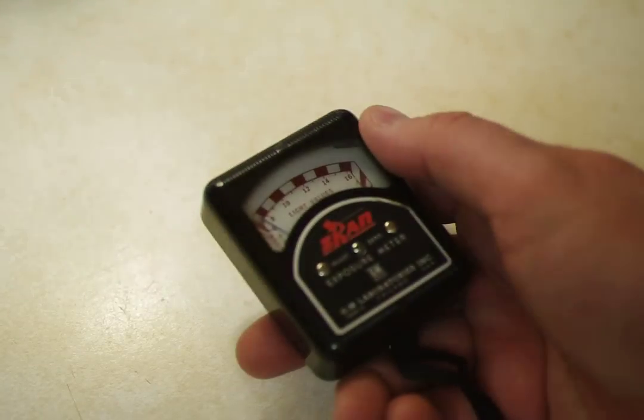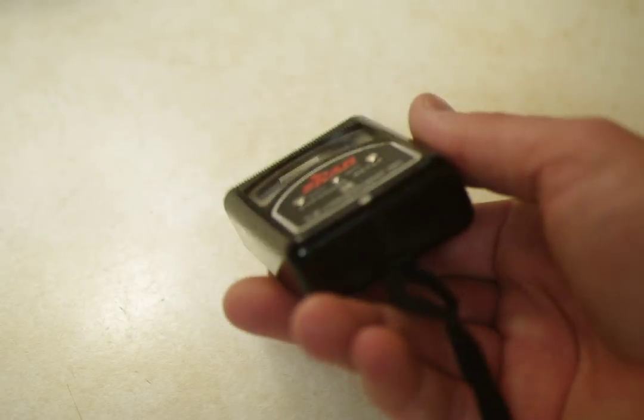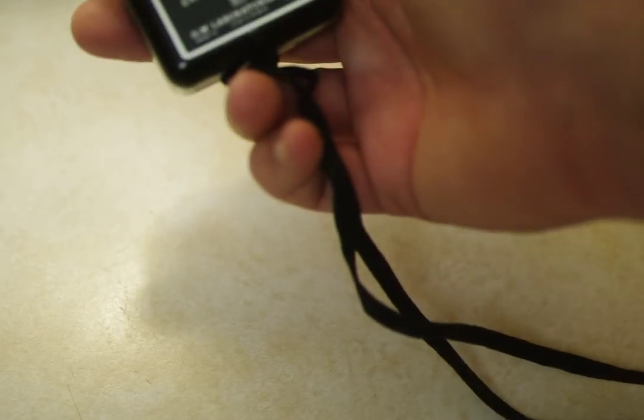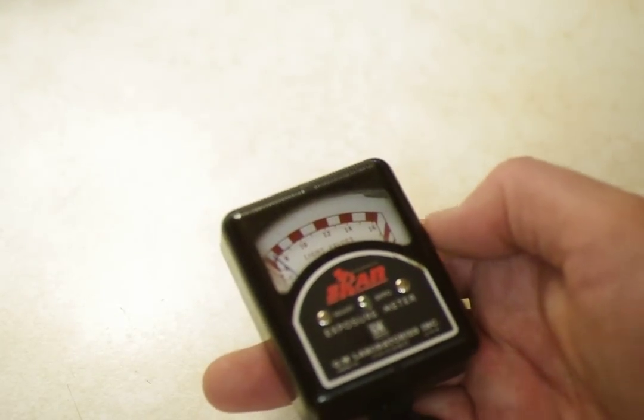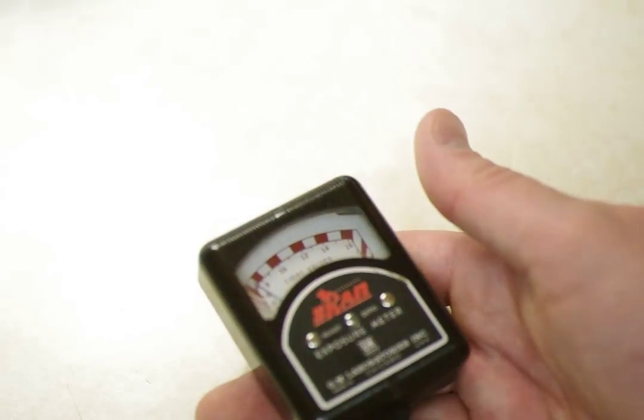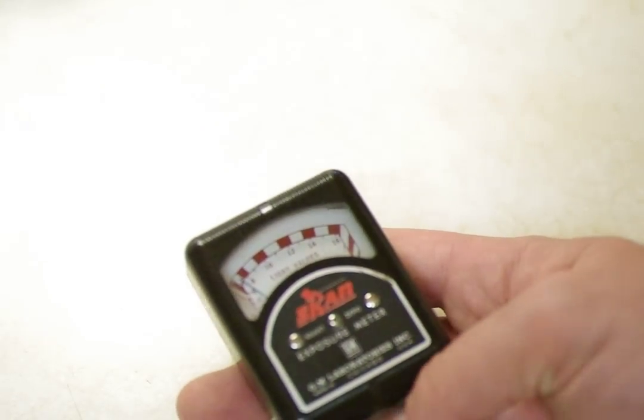So light meters were designed to be very simple devices. Photographer would pull it out of his pocket, pointed at the scene or pointed at a specific object he was photographing like this lamp off-camera and compute the light reading from that and using that he would then set his shutter and aperture settings according to the light meter, take his picture and it would theoretically be well exposed at minimum.